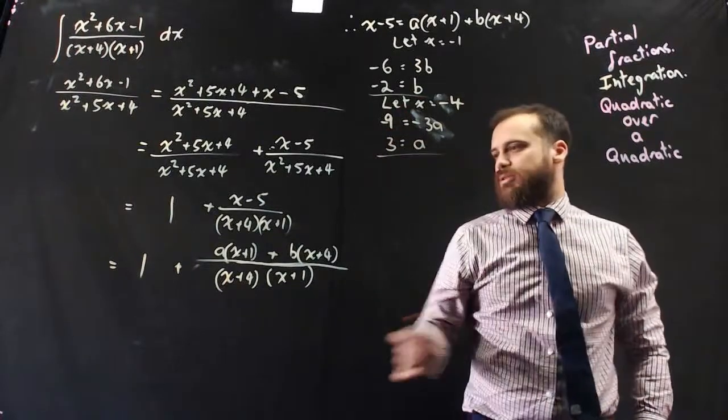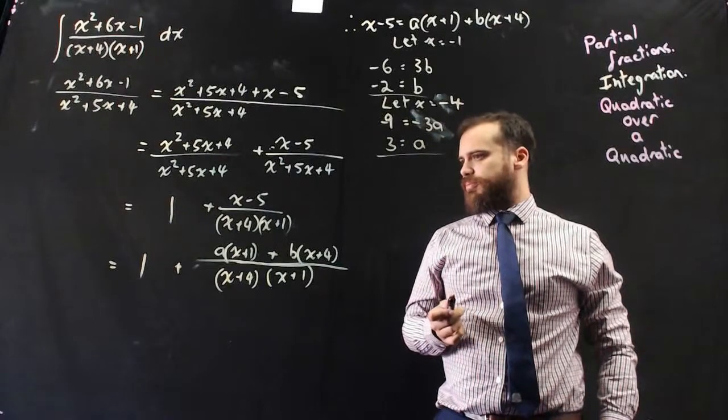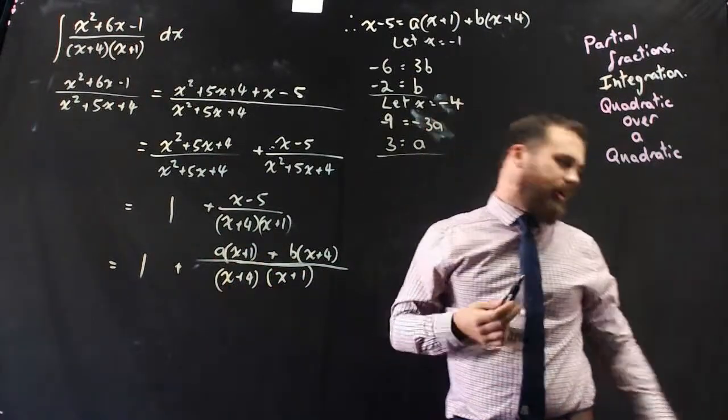So b is negative 2, a is 3. I can come back in here and work from there with an a value and a b value.